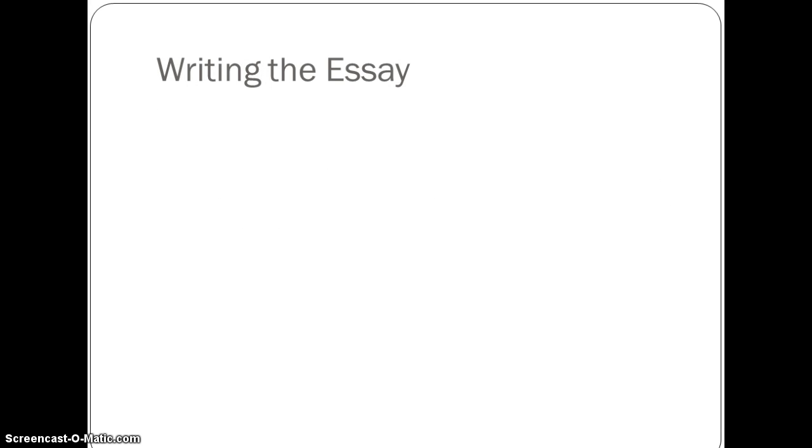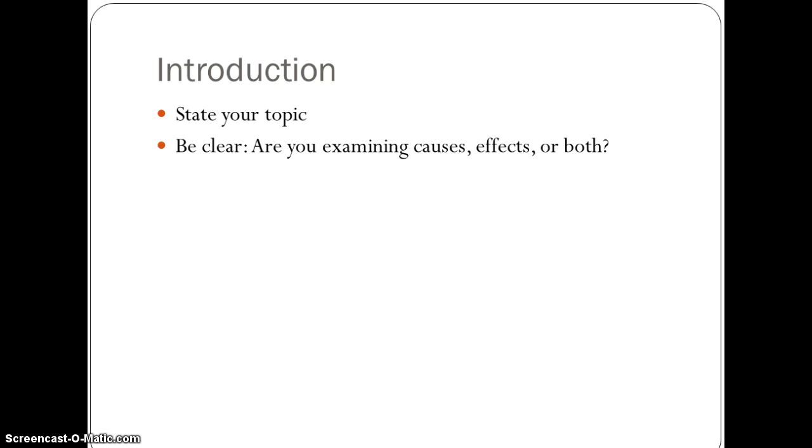So now that I have a topic and a thesis, I can begin drafting my essay. In my essay, I want to have an introduction that states the clear thesis statement, body paragraphs that explain the nature of the cause and effect relationship, and a conclusion that sums everything up. So let's start with the introduction. Just like in any introduction, you need to state your topic, and you need to be clear. Make sure the reader can tell if you are examining the causes, the effects, or both. In this particular example, I'm examining the causes. And then state your thesis. Make sure you state the cause and effect relationship and the main points.